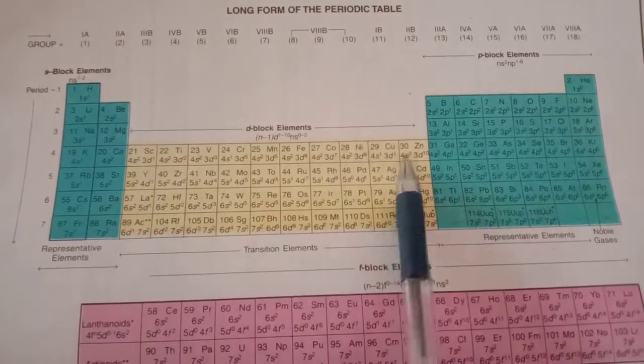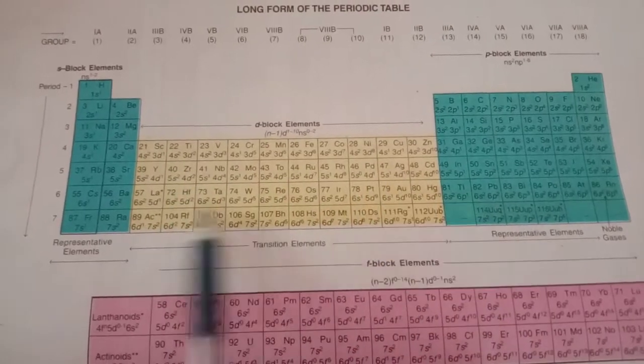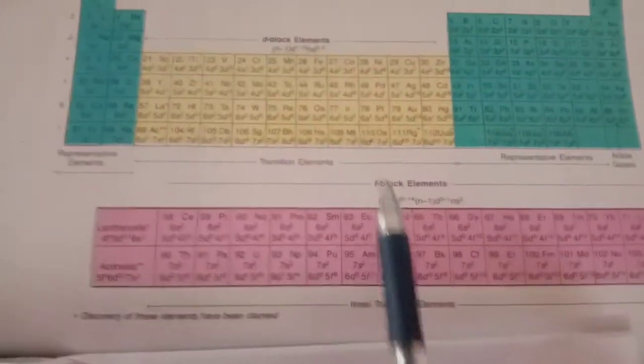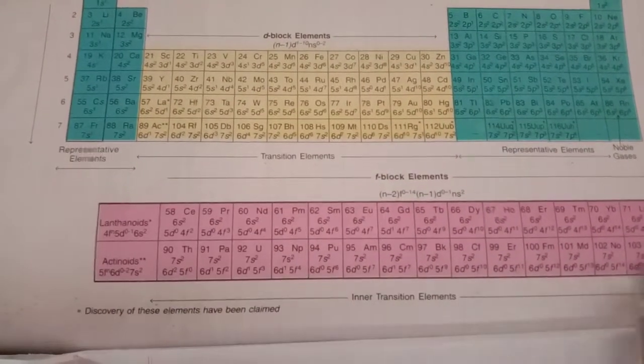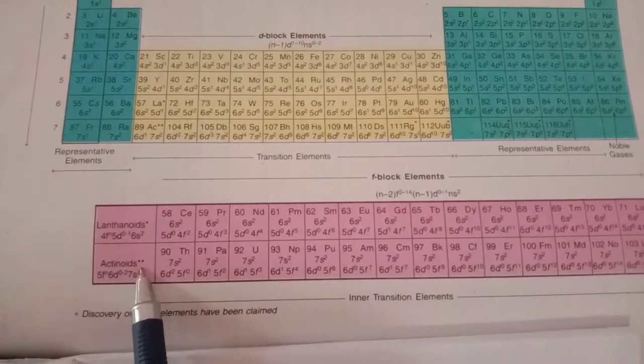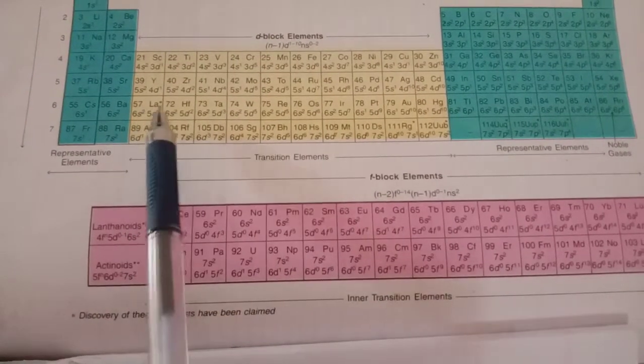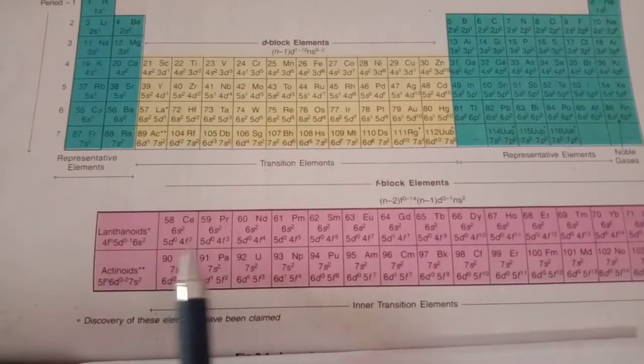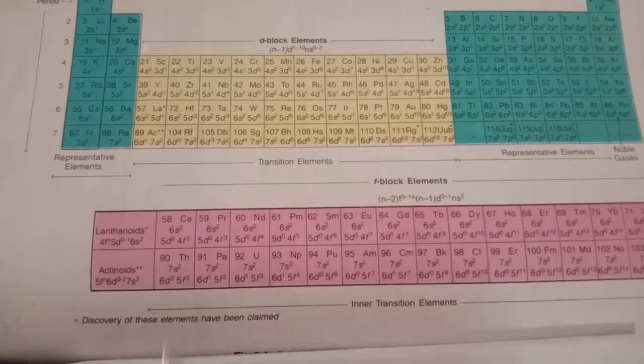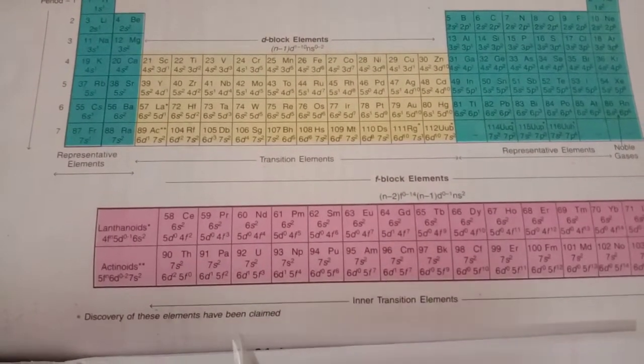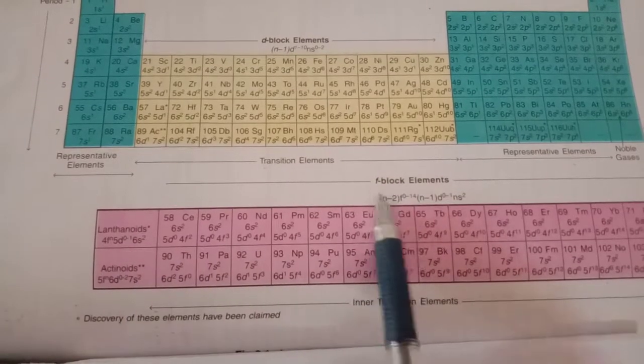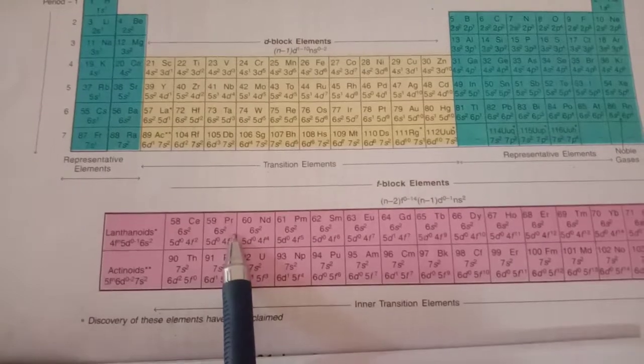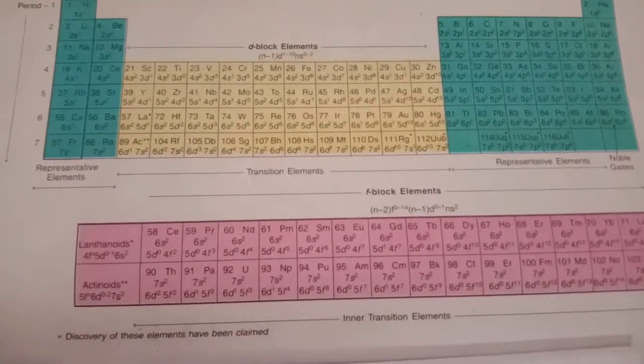These series are the first, second, third, and fourth transition series. Along with this is the F block - this lower part containing lanthanoids and actinoids. Actually, these come in between the D block elements, as we discussed earlier, but they are kept separately because their properties don't match here. Together, lanthanoids and actinoids are called F block elements or inner transition series, which we have already discussed.